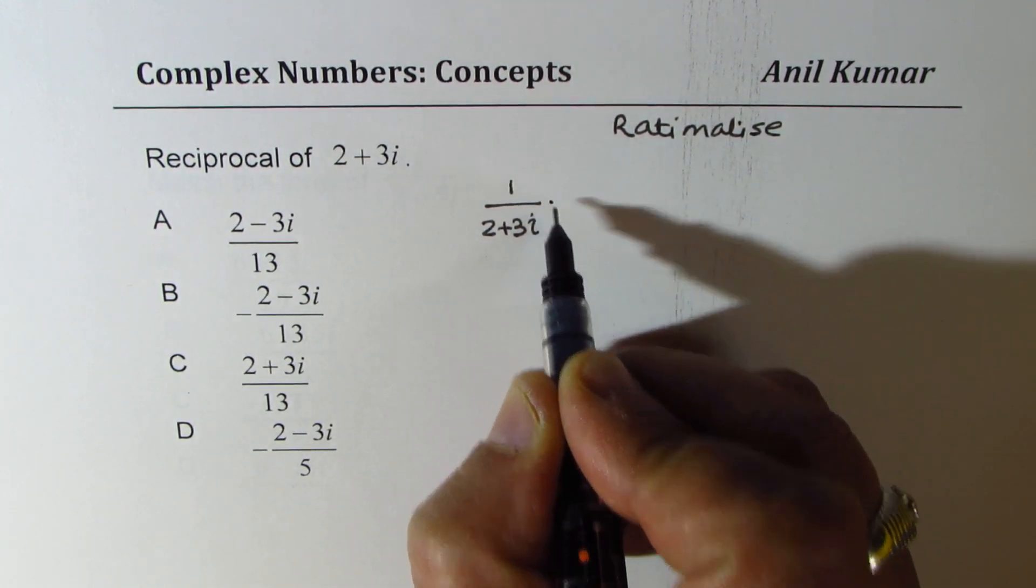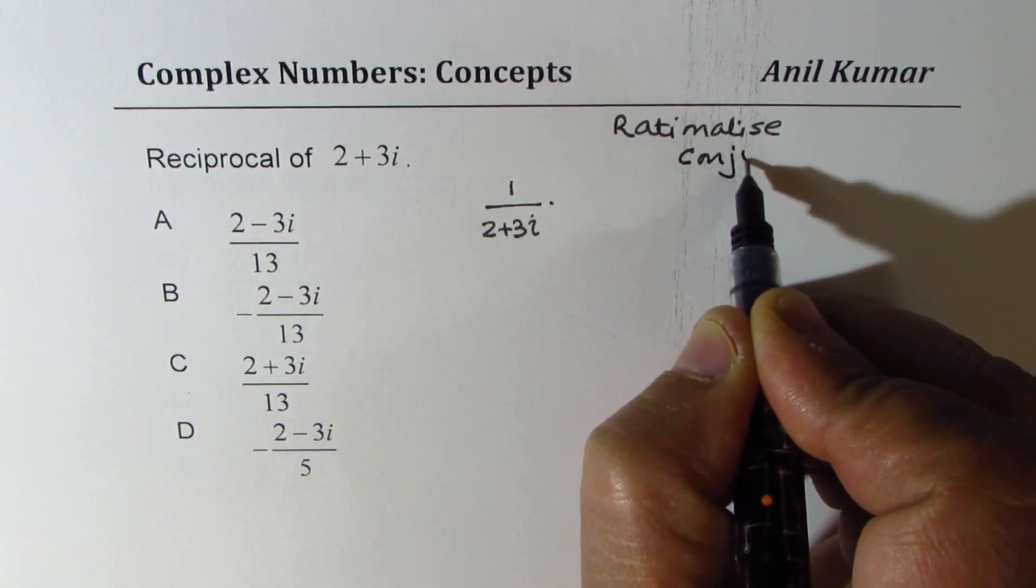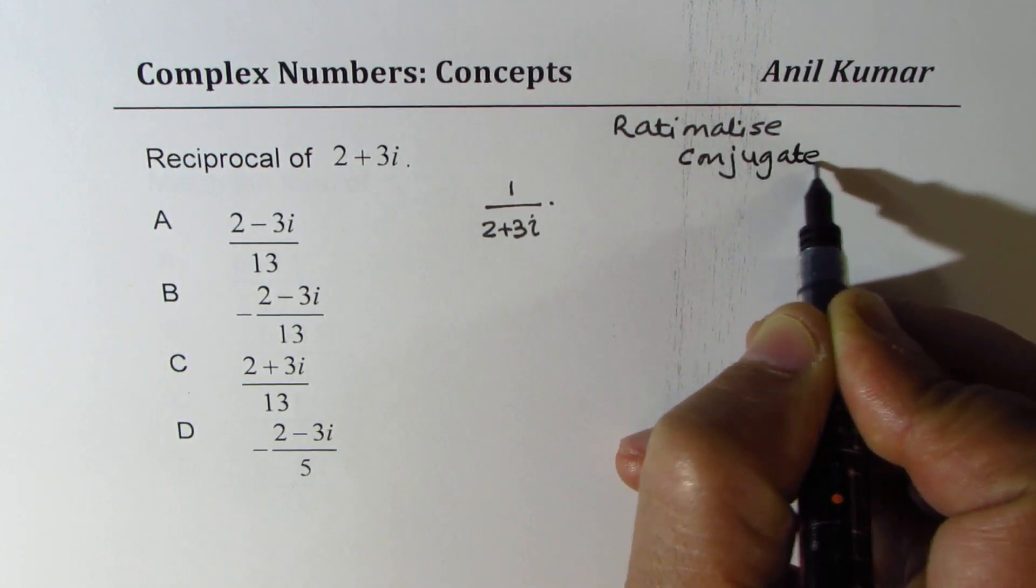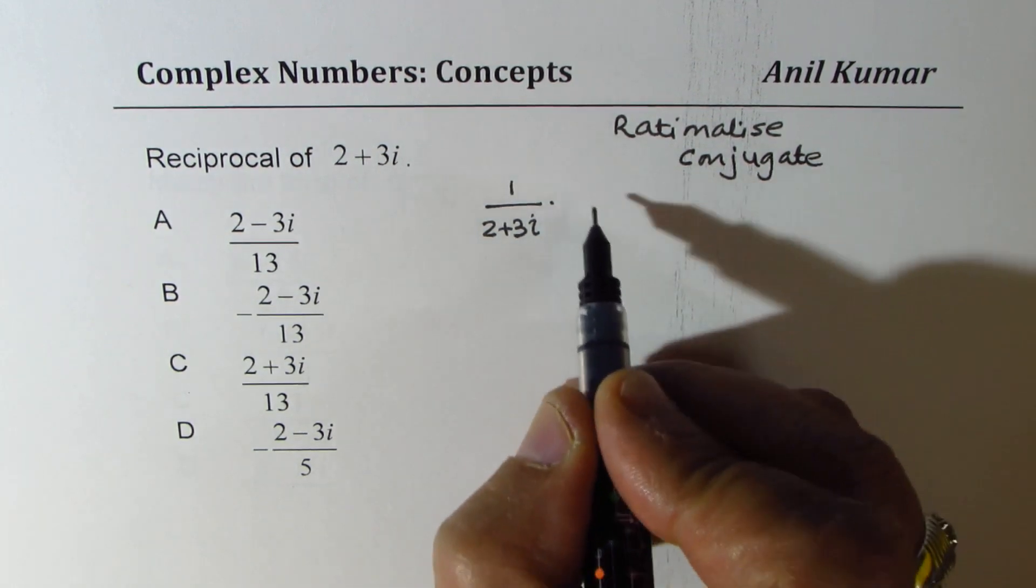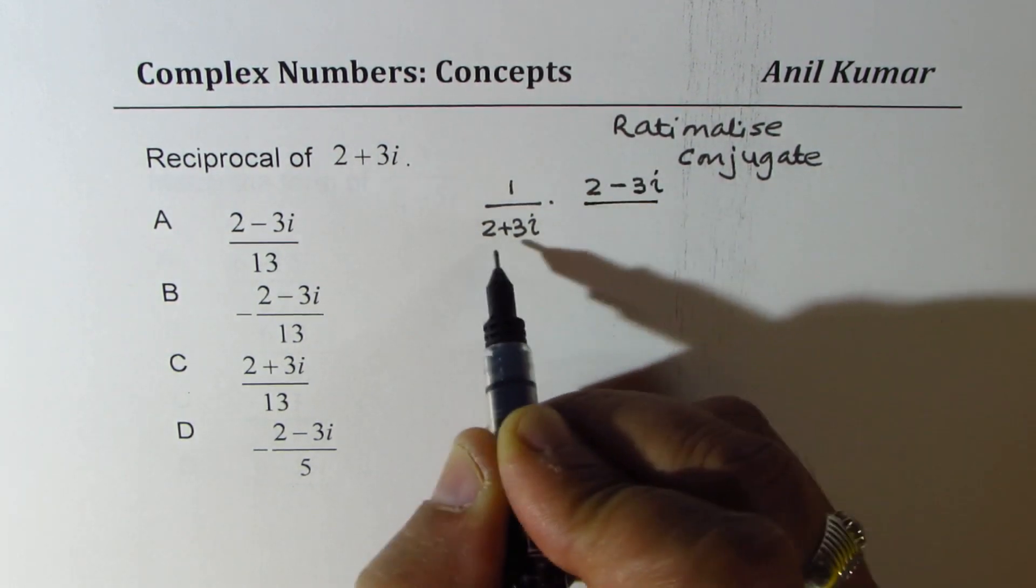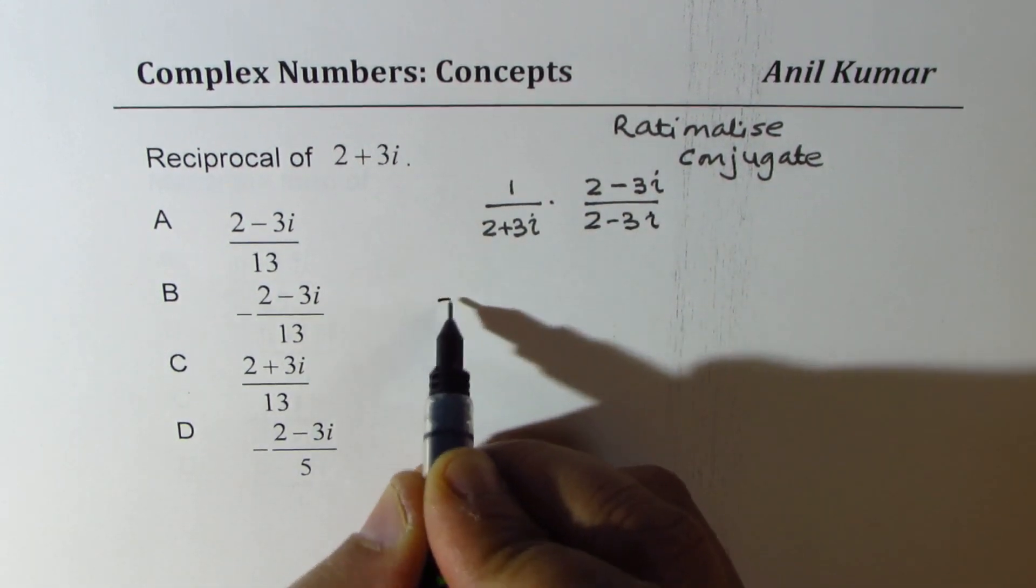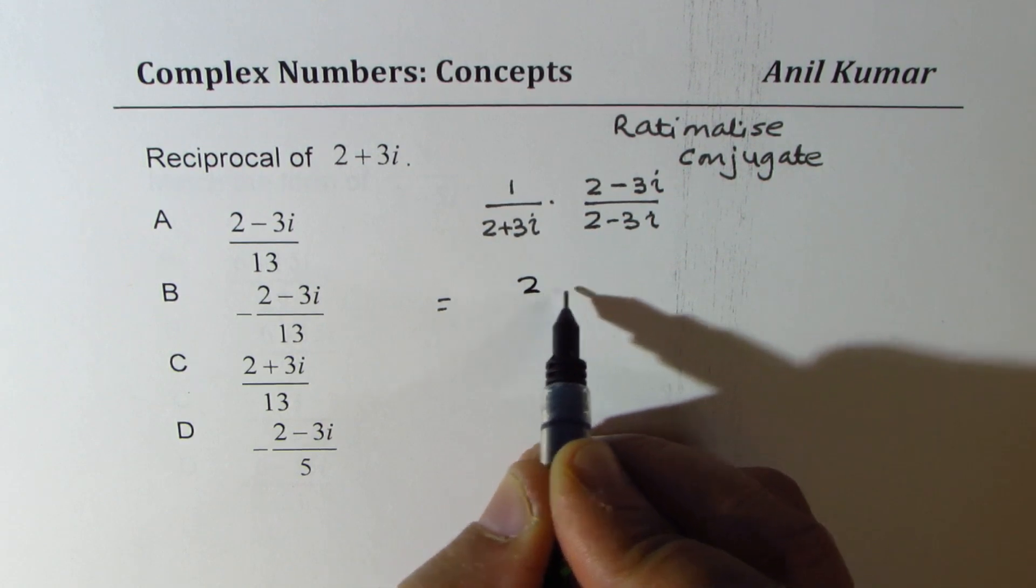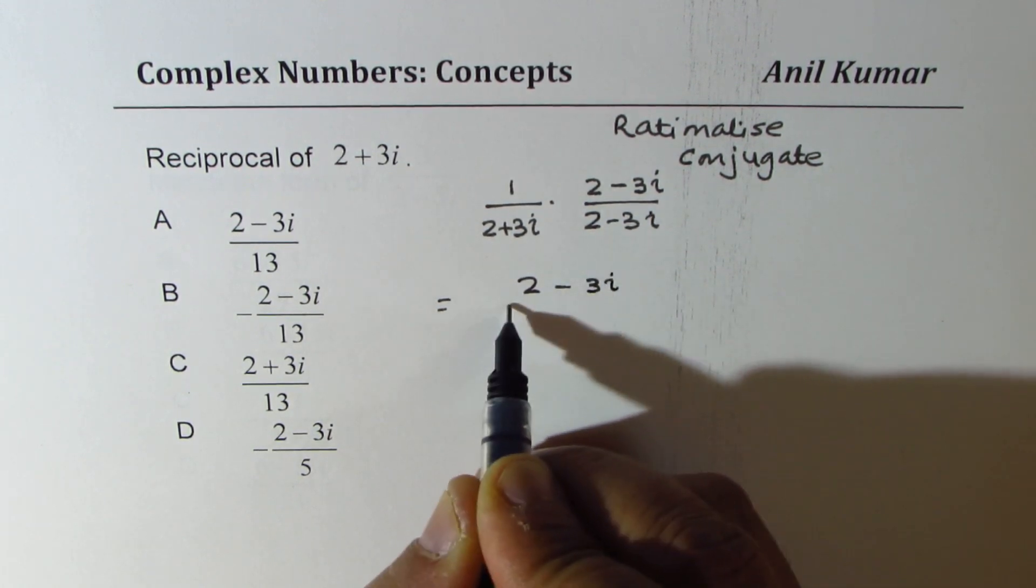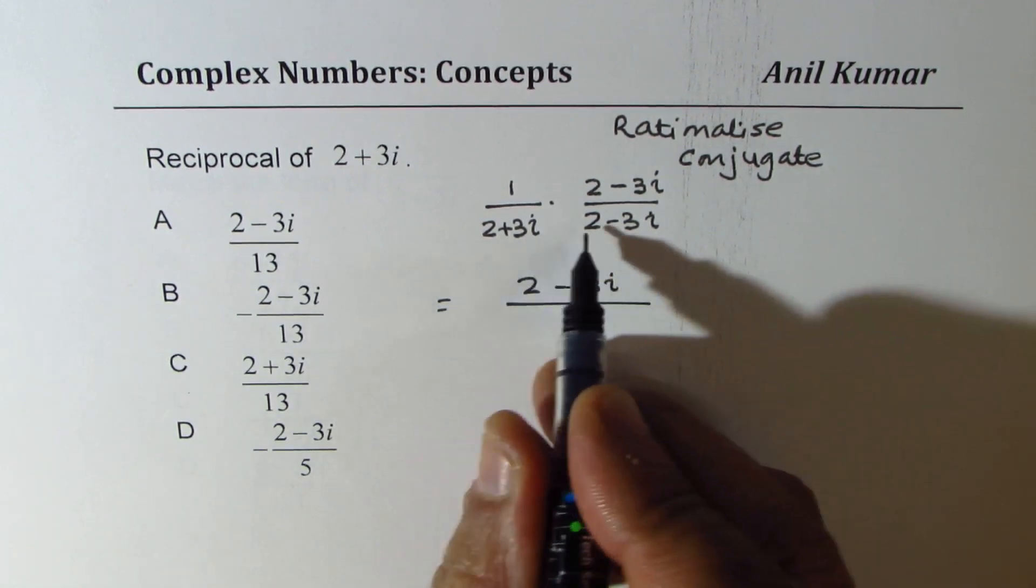To rationalize, you multiply by its conjugate. What is conjugate? You have to change the sign. 2 minus 3i is conjugate of 2 plus 3i. Now when you multiply, in the numerator we get 2 minus 3i. However, in the denominator, it is like difference of squares. So you get 2 squared, which is 4, minus 3i squared.